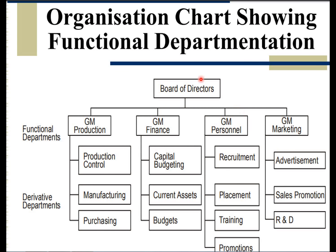Looking at the organization chart showing functional departmentation: there is a board of directors, then functional departments headed by a General Manager for production, General Manager for finance, General Manager for marketing, and General Manager for personnel. Under production, there are sub-functions such as production control, manufacturing, and purchasing. This is departmentation on the basis of function.